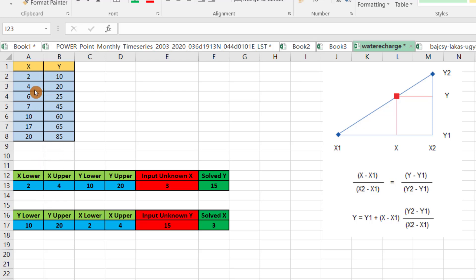Y lower belongs to x lower and y upper belongs to x upper. Input an unknown x - for example, I want to know the value of y when x is 3. As you see, the result is 15, between 10 and 20. But how do we solve it? We have to input the linear interpolation equation.